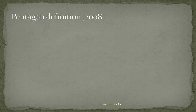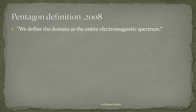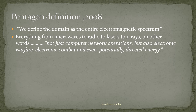We will see the Pentagon definition of cyberspace provided in 2008. This definition says we define the domain as the entire electromagnetic spectrum — everything from microwaves to radio to lasers to x-rays. In other words, not just computer network operations, but also electronic warfare, electronic combat and even potentially directed energy. We can understand that this definition also indicates to include cyber warfare, cyber terrorism, and cyber warfare management laws.